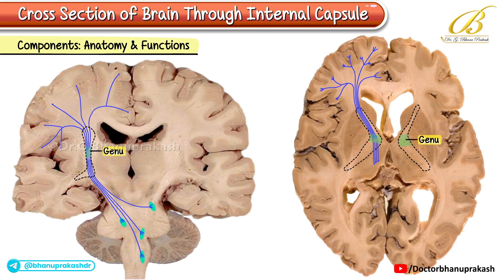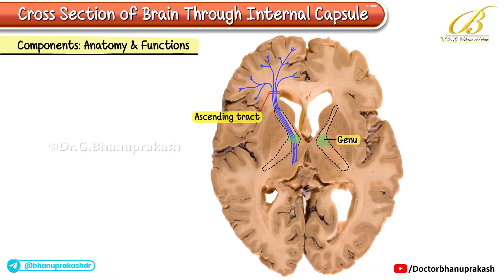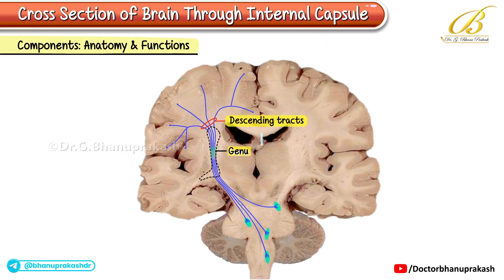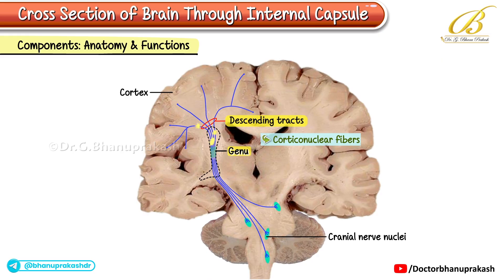Genu: The genu of the internal capsule contains specific components for both ascending and descending tracts. Ascending tracts: Superior thalamic radiation transmits sensory information from the thalamus to the cerebral cortex. Descending tracts: Corticonuclear fibers convey motor commands from the cortex to the cranial nerve nuclei in the brain stem.